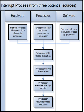If implemented in hardware, an interrupt controller circuit such as the IBM PC's Programmable Interrupt Controller may be connected between the interrupting device and the processor's interrupt pin to multiplex several sources of interrupt onto the one or two CPU lines typically available. If implemented as part of the memory controller, interrupts are mapped into the system's memory address space.